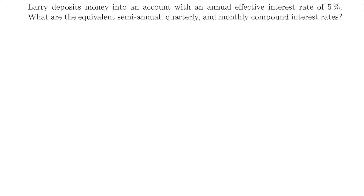For our next example, Larry deposits money into an account with an annual effective interest rate of 5%. What are the equivalent semi-annual, quarterly, and monthly compound interest rates? This is the reverse of what we've been doing — before we were given a non-annual rate and found the annual rate, but now we're given the annual rate and want to find rates that are not annual. We'll use the same formula, just solving for a different variable. We have i, and we'll solve for j, as long as we know our number of periods per year.